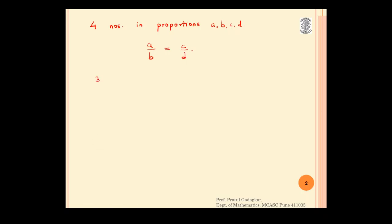But if we have three numbers, we say three numbers are in proportion if — calling those three numbers A, B, C — they are said to be in proportion if A upon B is equal to B upon C. So let us take examples of problems based on four numbers in proportion and three numbers in proportion.